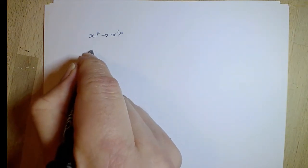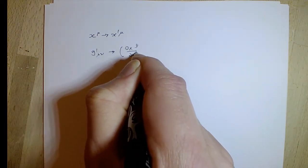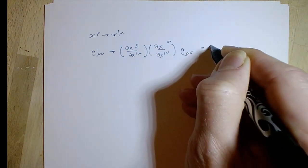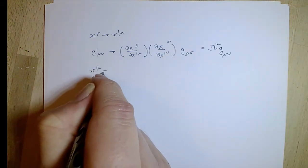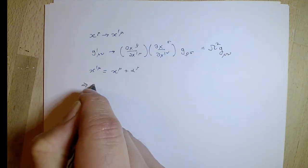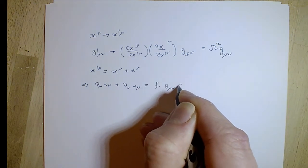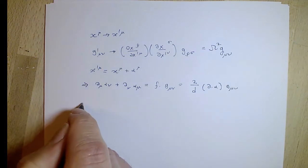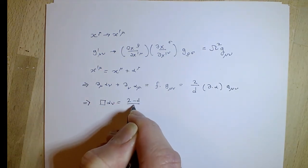A conformal transformation — a change of coordinates x to x' — is conformal if it changes your metric in the standard way only by a factor. It's often much simpler to think about infinitesimal transformations, x goes to x plus alpha. The fact that the metric changes by an overall factor can be worked out to be a differential relation for alpha.